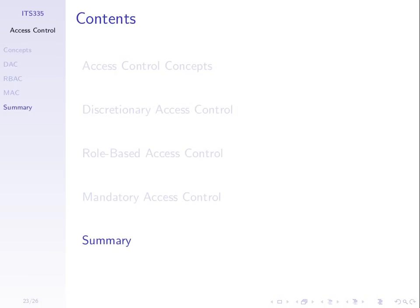That summarises the three approaches to access control. They are not mutually exclusive — you can combine them, using components of each. It's important to be aware of all three. We'll now go through an example showing some cases of Linux access control — discretionary access control — introducing one or two new things as we go.